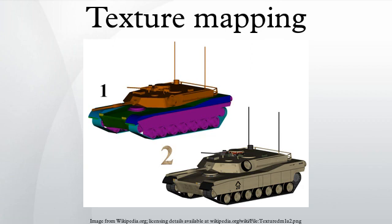Bump mapping has become popular in recent video games as graphics hardware has become powerful enough to accommodate it in real time. The way the resulting pixels on the screen are calculated from the texels is governed by texture filtering. The fastest method is to use nearest neighbor interpolation, but bilinear interpolation or trilinear interpolation between mipmaps are two commonly used alternatives which reduce aliasing or jaggies. In the event of a texture coordinate being outside the texture, it is either clamped or wrapped.